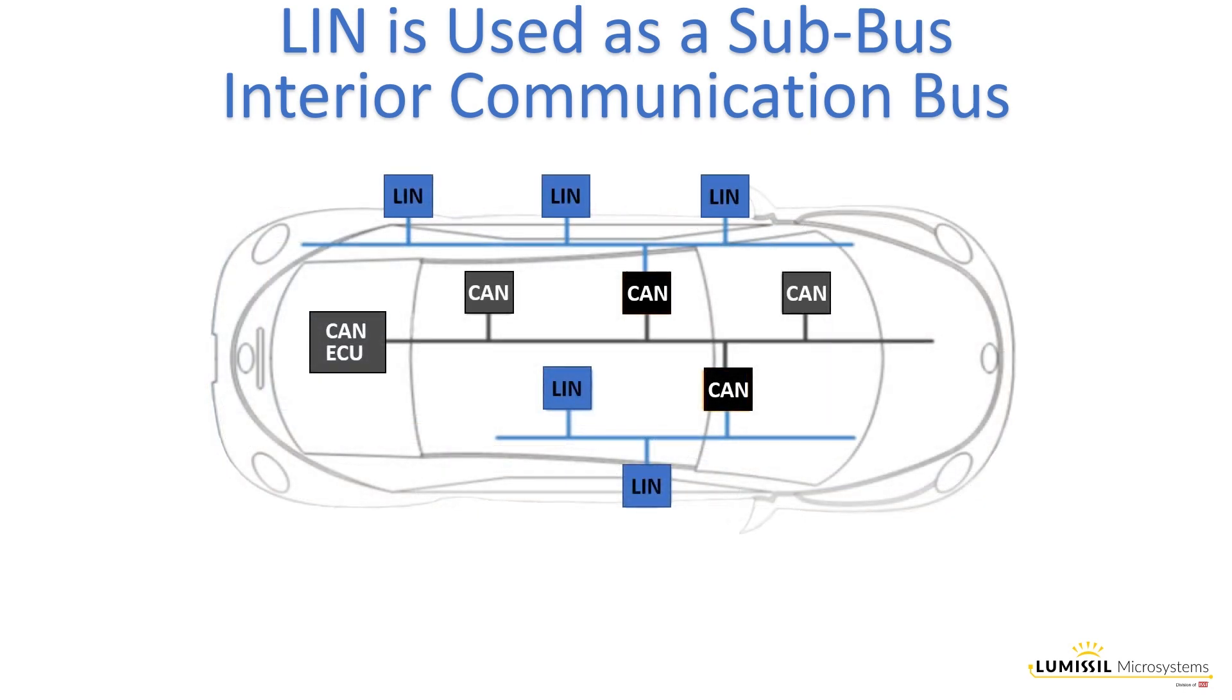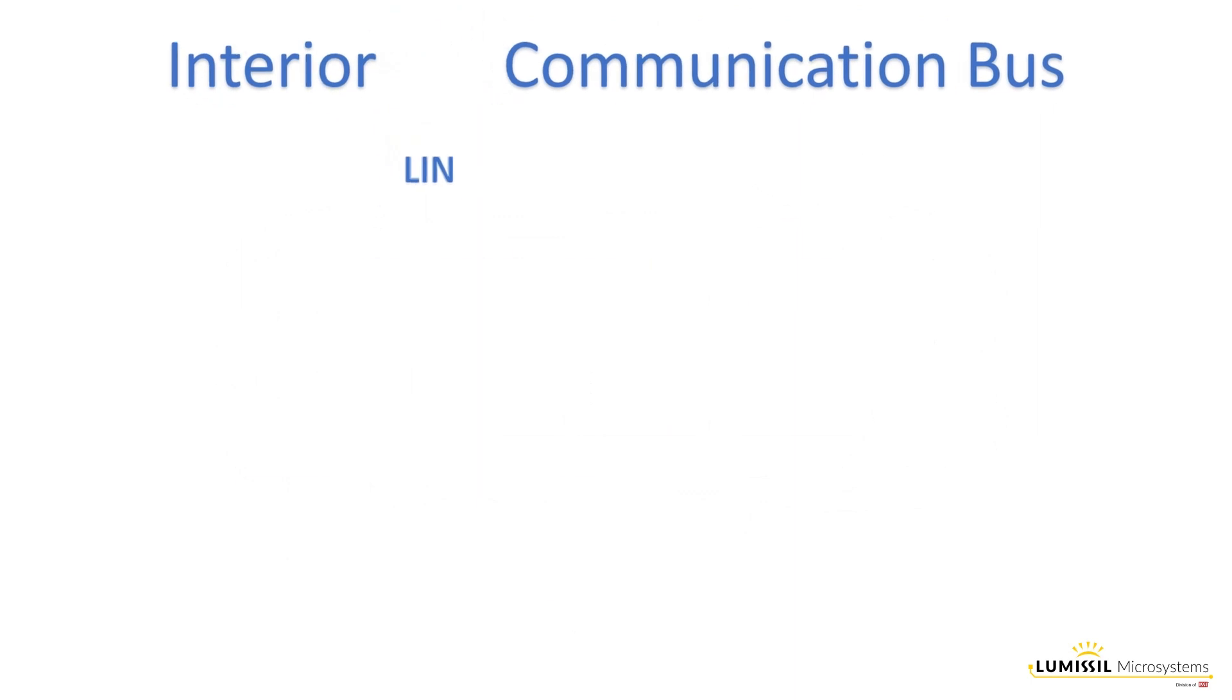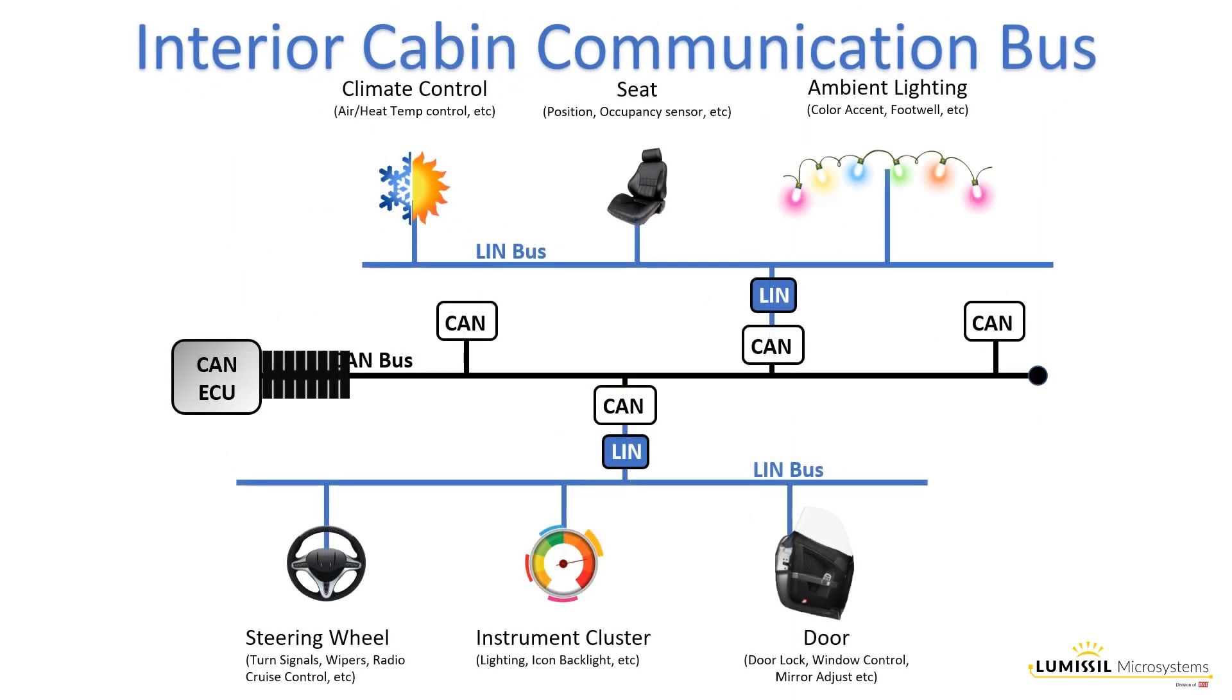Due to its slower speed, LIN is a sub bus that leverages CAN's robust architecture and speed. Here we see that CAN is the communication backbone and LIN are distributed sub nodes. In this animation, the CAN ECU sends out commands over the fast CAN bus to specific LIN nodes responsible for functional and comfort applications.